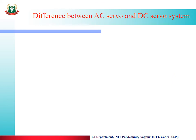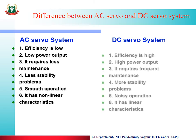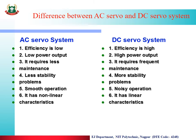Differences between AC servo and DC servo system: AC servo has low efficiency but DC servo has very high efficiency. AC has low power output while DC has high power output. AC servo requires less maintenance but DC requires frequent maintenance. AC has less stability problem whereas DC has more stability problem. AC servo operation is very smooth but DC has noisy operation, meaning errors are more. AC servo system has non-linear characteristics but DC servo system has linear characteristics.